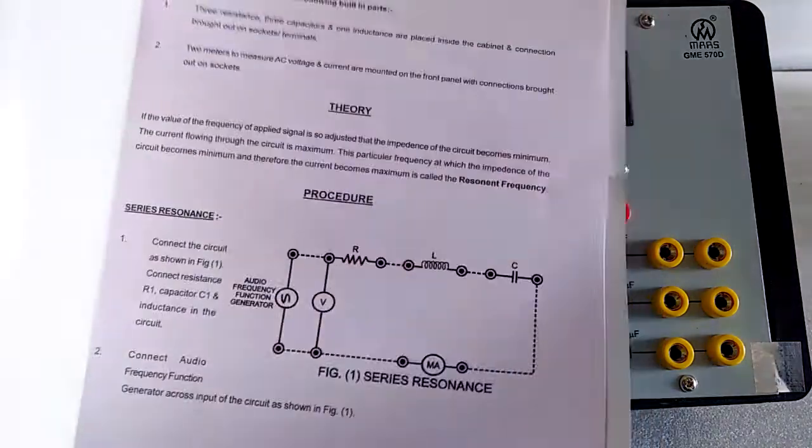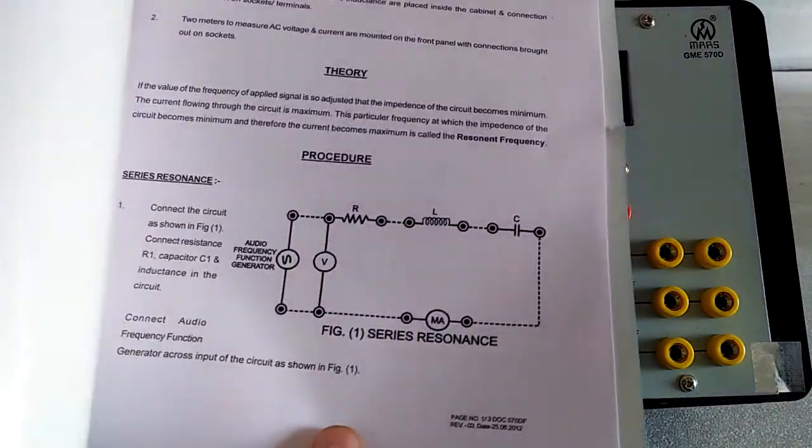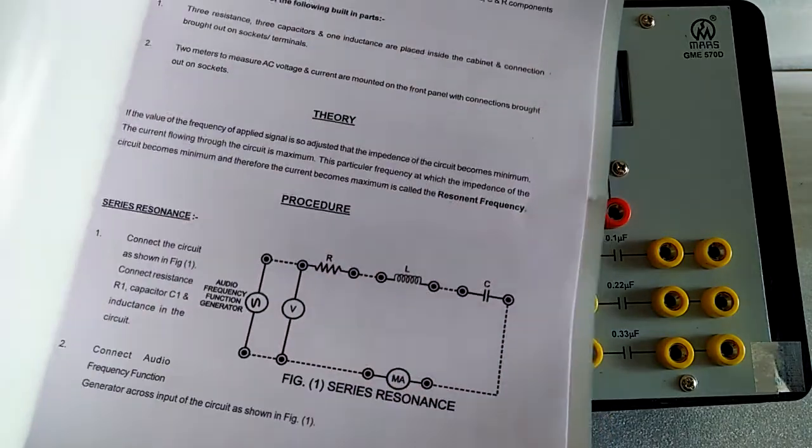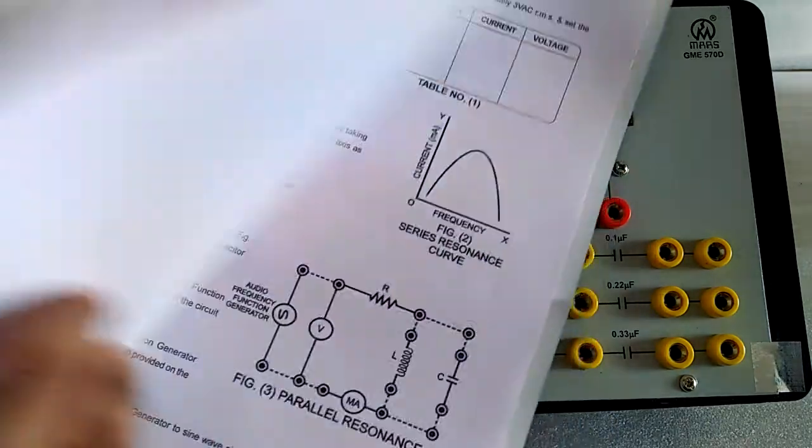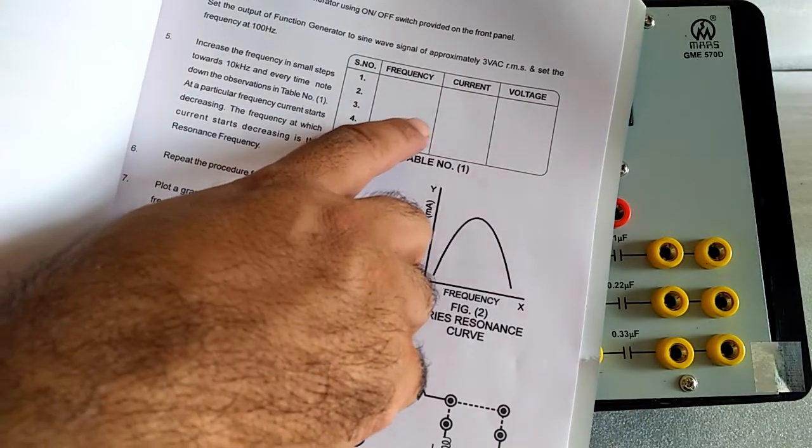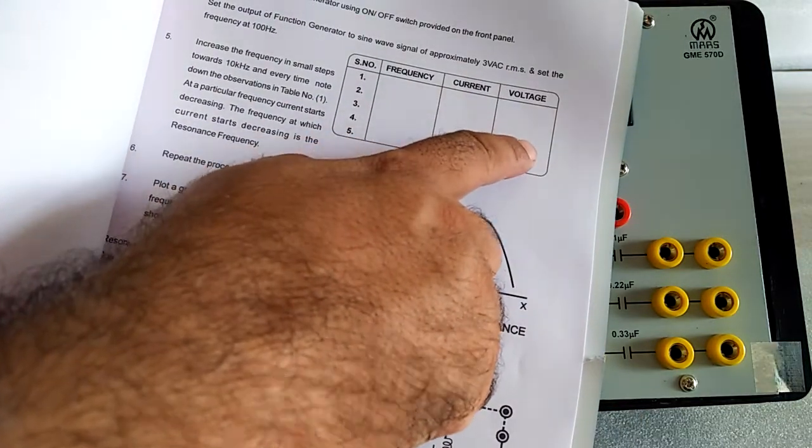Here in the manual, we have given the procedure and the circuit for the series and the table for the frequency, current and voltage.